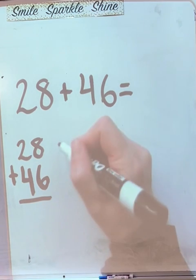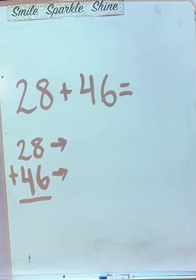Okay, the next step is to draw our little arrows so we can write the expanded form of each number, right? Each addend.